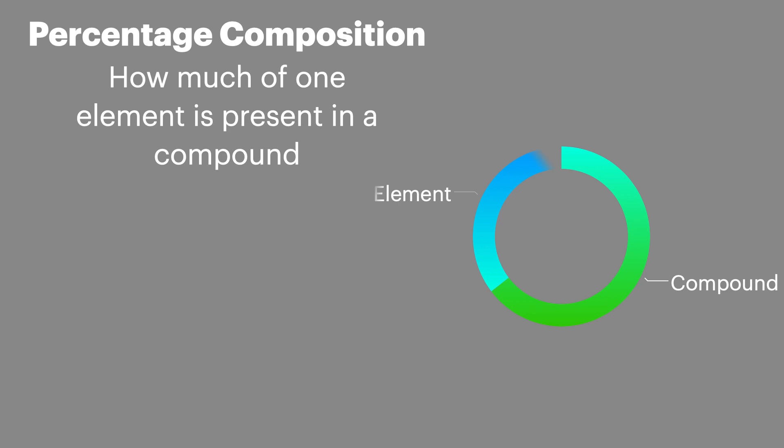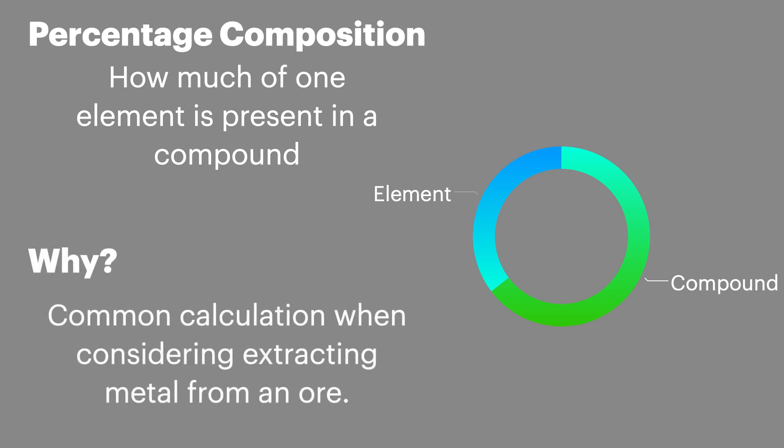Percentage composition is how much of one element is present in a compound. This is a common exam question when looking at extracting an element from a compound or a metal from an ore. This calculation lets you work out how much pure element you can produce.